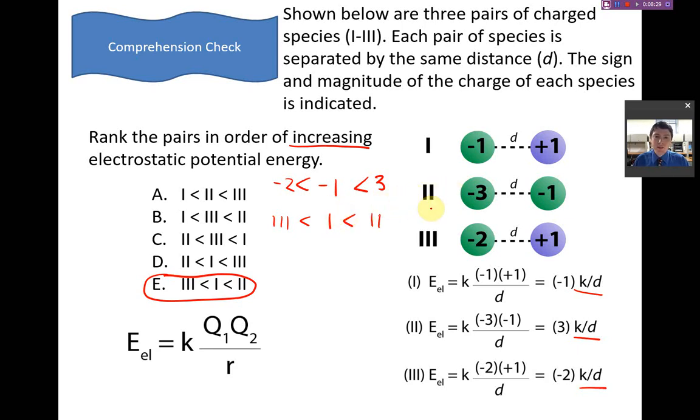Number 2 has a magnitude of 3 and an overall value of 3. Number 1 has a magnitude of 1, but an overall value of minus 1. And set number 3 has a magnitude of 2 and an overall energy of minus 2.